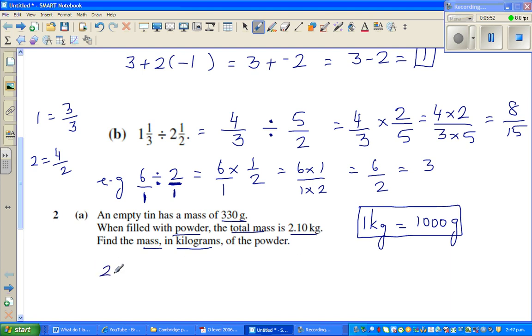So 2.10 kg is 2.1 times 1,000. This is same as 210 divided by 100 times 1,000. So this 0 and the 0s can cancel. So this is 2,100 grams. You can do this directly. So 2 kilograms, this is same as 2.1 kg. 2 kg is 2,000 grams. And 0.1 kg is 100 grams.